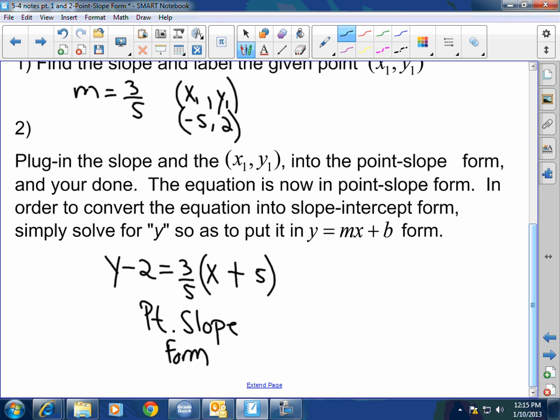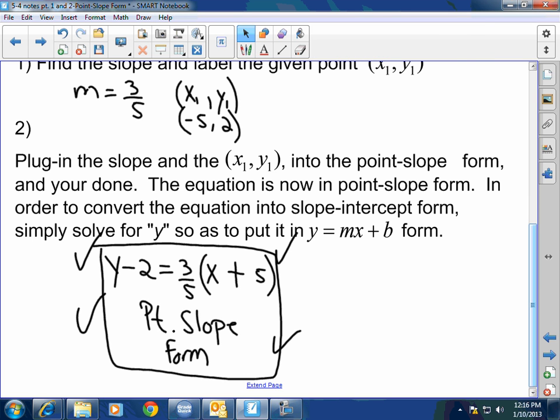Now, does this look like a nice, pretty way to graph it? What did we just say was the best way to graph it? Slope-intercept form. The equation is now in point-slope form, done. In order to convert the equation into slope-intercept form, simply solve for y, so as to put it in y equals mx plus b. Once I have this, if I solve for y, then I can graph it easily.